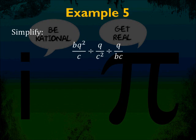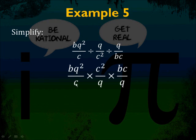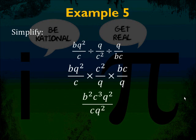Example 5: bq squared over c divided by q over c squared, divided by q over bc. When you divide by a fraction, multiply by its reciprocal — and we do that twice. Rewrite as bq squared over c times c squared over q times bc over q. Combine everything: b squared c cubed times q squared all over cq squared. Cancel common factors — c on bottom cancels, the two q squareds cancel. The answer is simply b squared c squared.